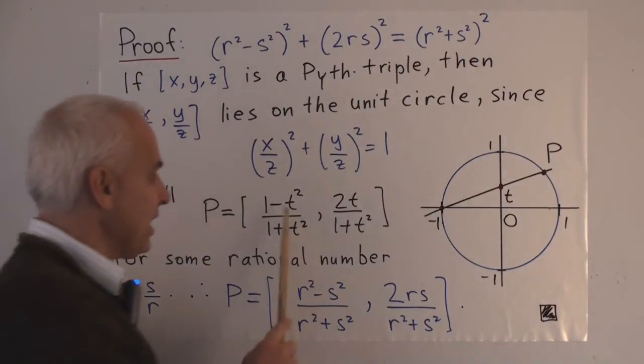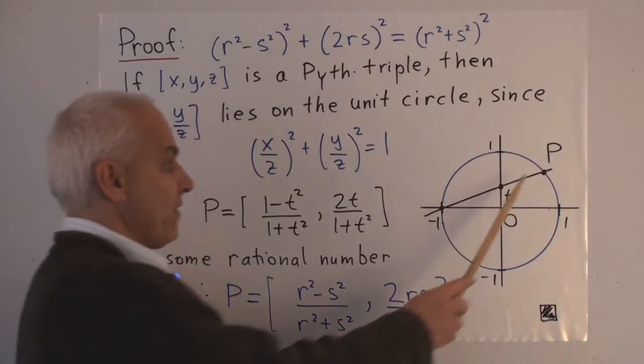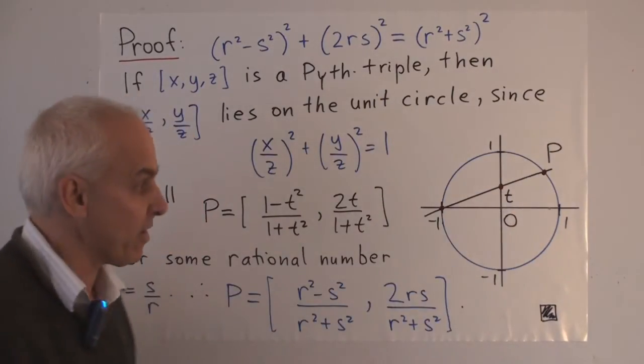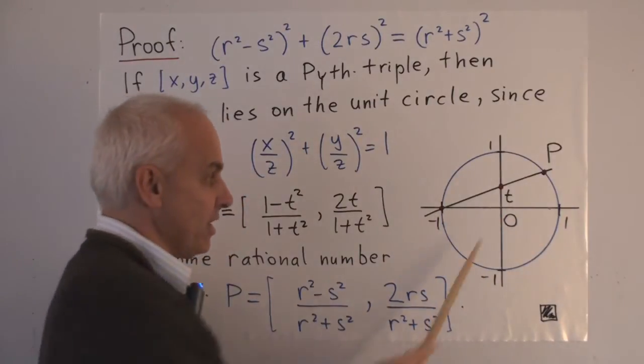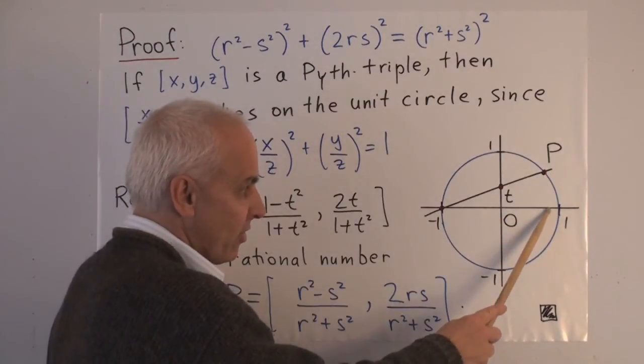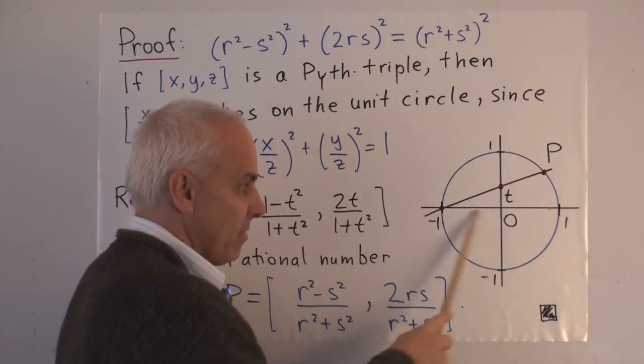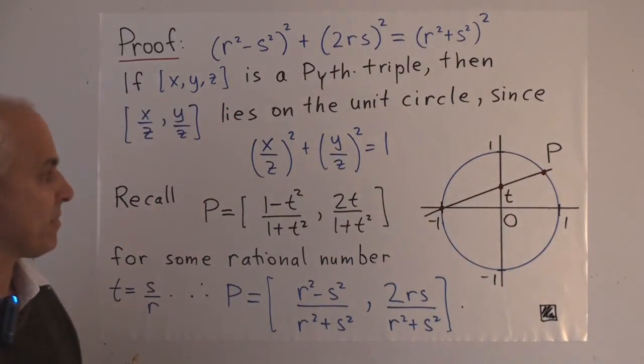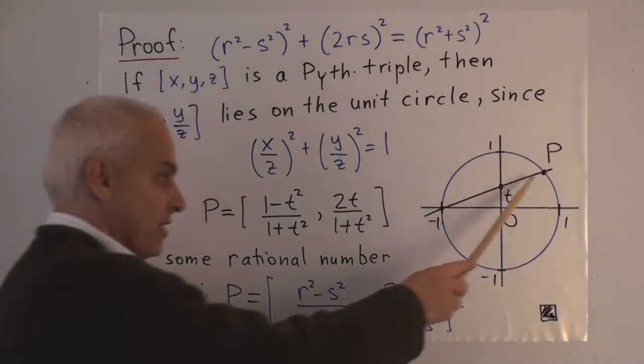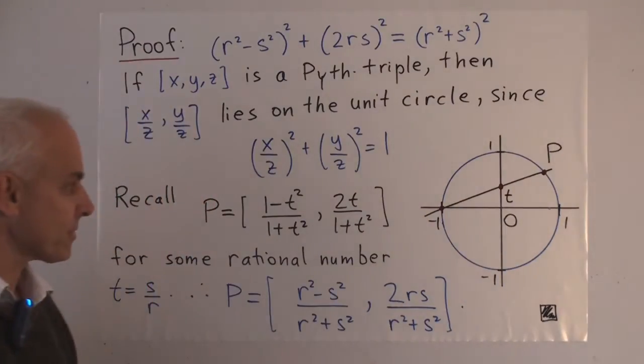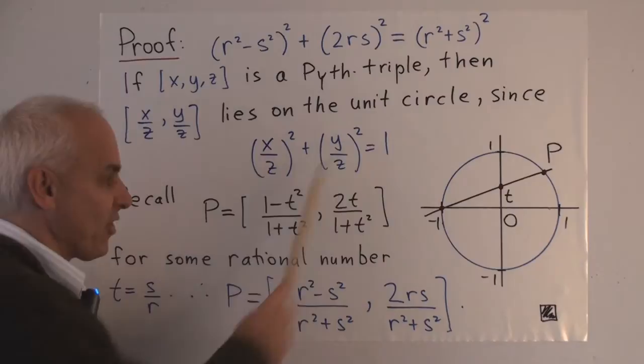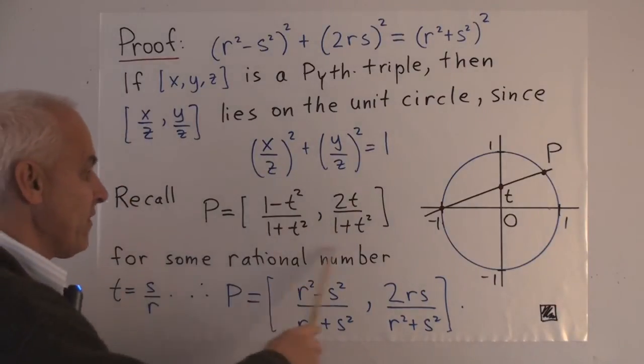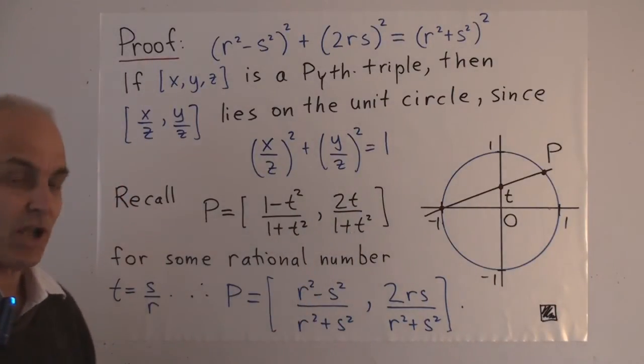And t itself is going to be a rational number if the coordinates here are rational numbers, because the ratio of t to 1, which is t, is going to be the same as this to this. And then that's going to be a rational number because the two coordinates are rational numbers. And so we have the situation that we know what all solutions of this equation are. They're necessarily of this form for some rational number t.